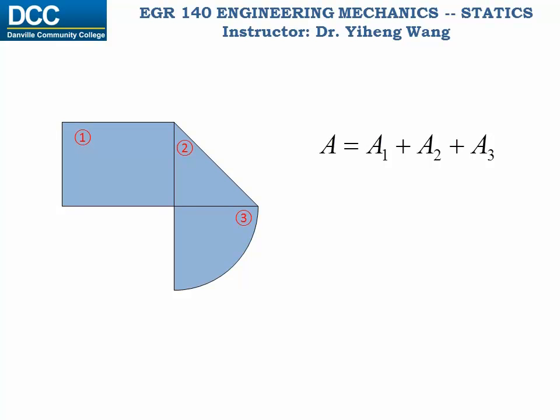It's the same for area moment of inertia. Of course there's a difference, because unlike area, moment of inertia must be calculated about a specified axis. So if you want to find the moment of inertia of this composite shape about the x-axis, you simply need to add up the moment of inertia of each component shape about the same x-axis. But how do we find the moment of inertia of the composite shapes about this axis? We can apply the parallel axis theorem.